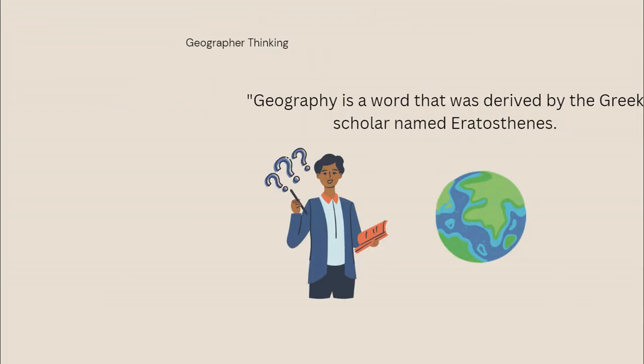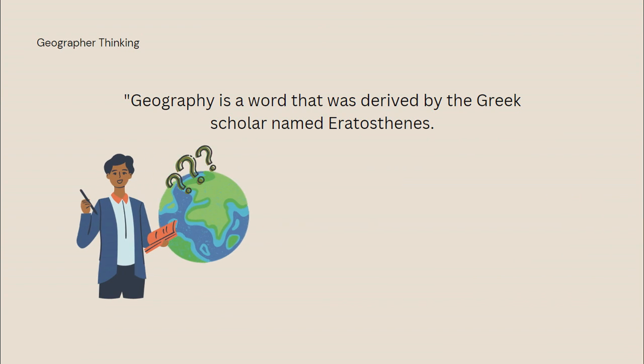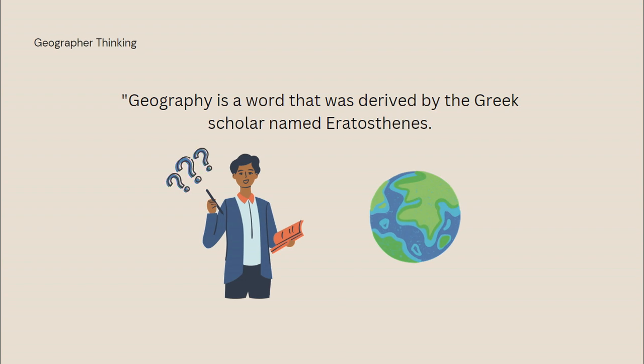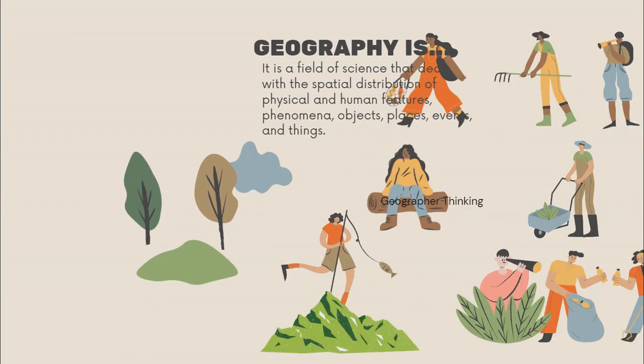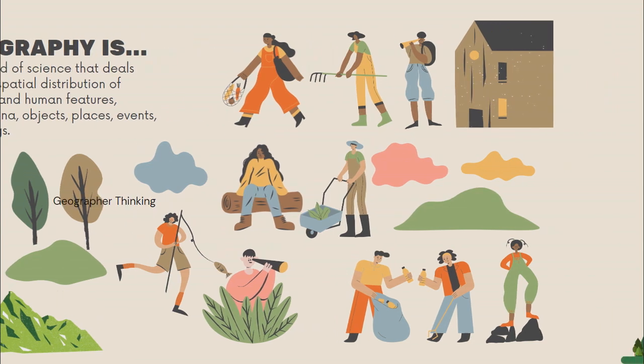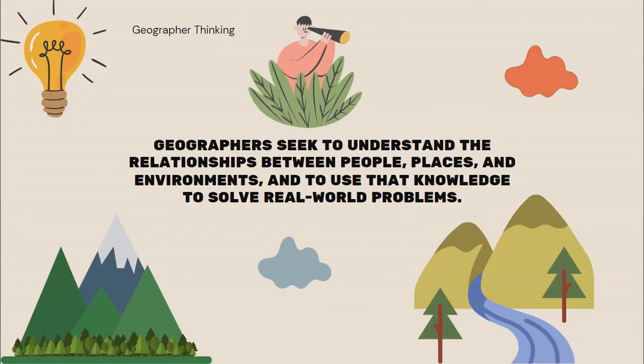Geography is a word derived by the Greek scholar named Eratosthenes — it's difficult to pronounce. It is a field of science that deals with the spatial distribution of physical and human features, phenomena, objects, places, events, and things.